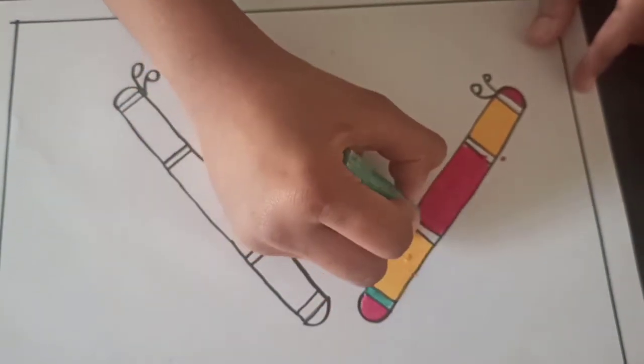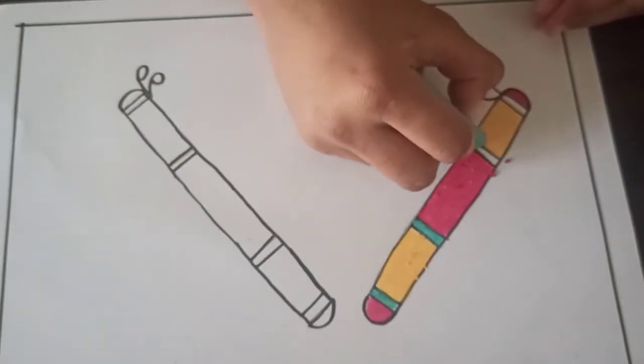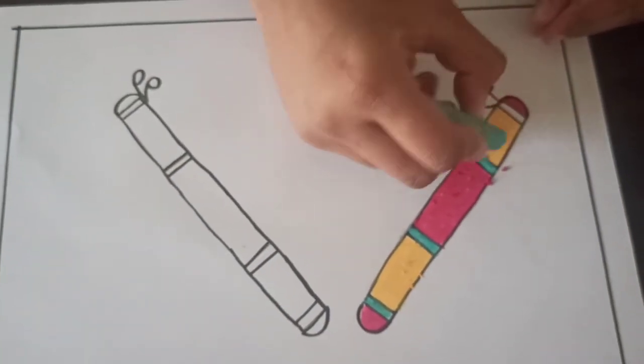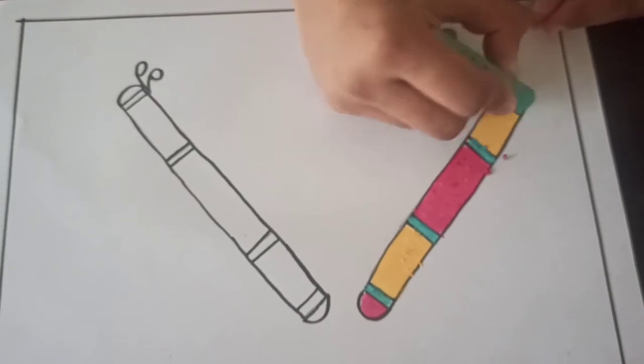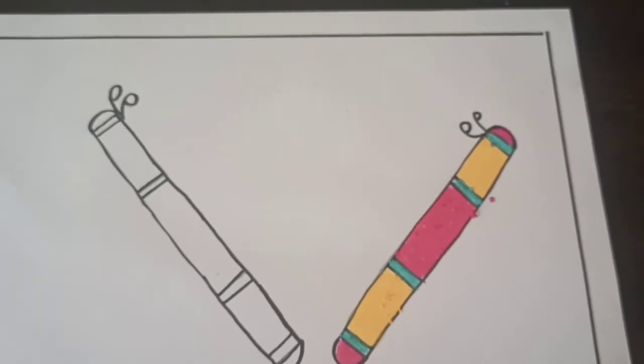For this middle lines I am using this color. See. Now it is looking good. And the end side. So our one dandiyas is ready. Now in the same way we will fill color in the another dandiyas stick.